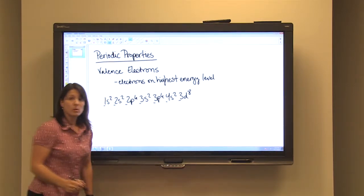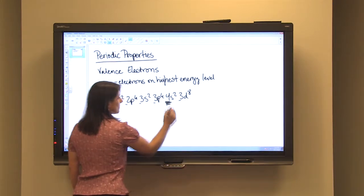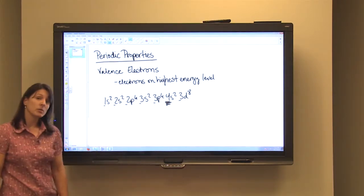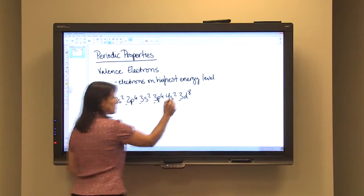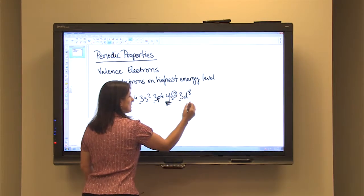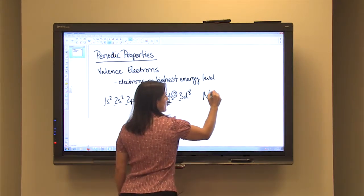The energy levels are designated by the numbers. So 4 would be the highest energy level. On the 4th energy level, we have 2 electrons. So that means that nickel has 2 valence electrons.